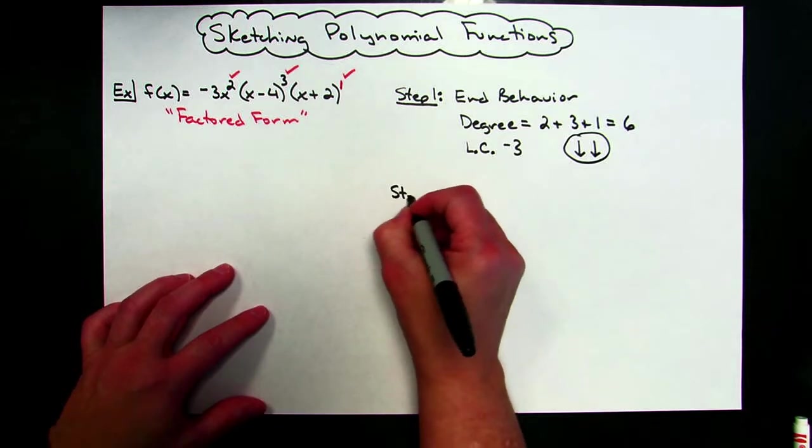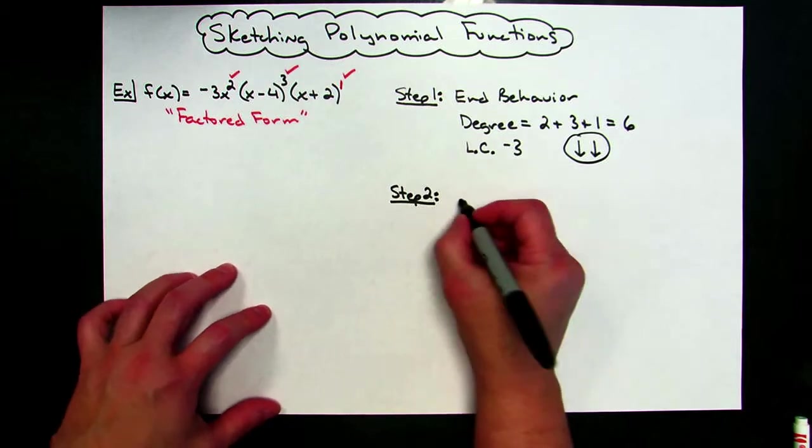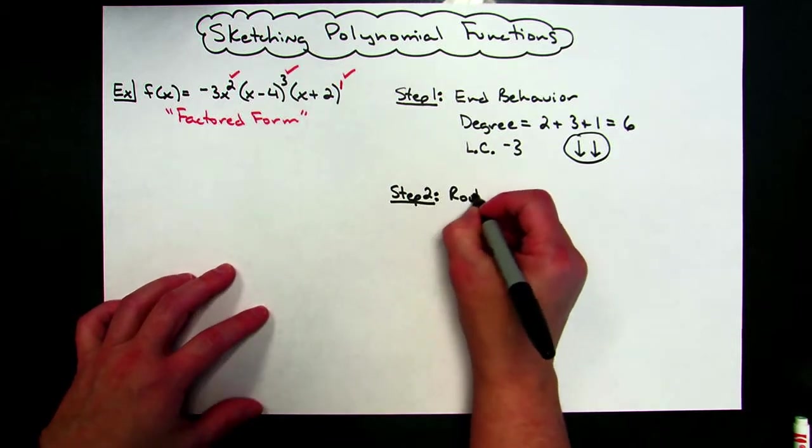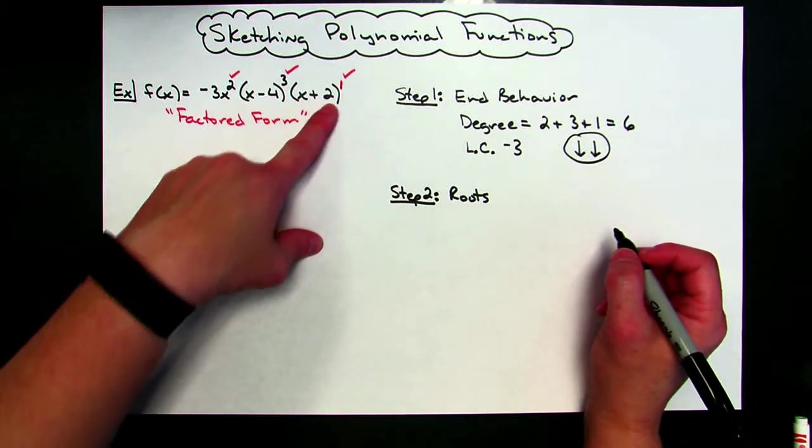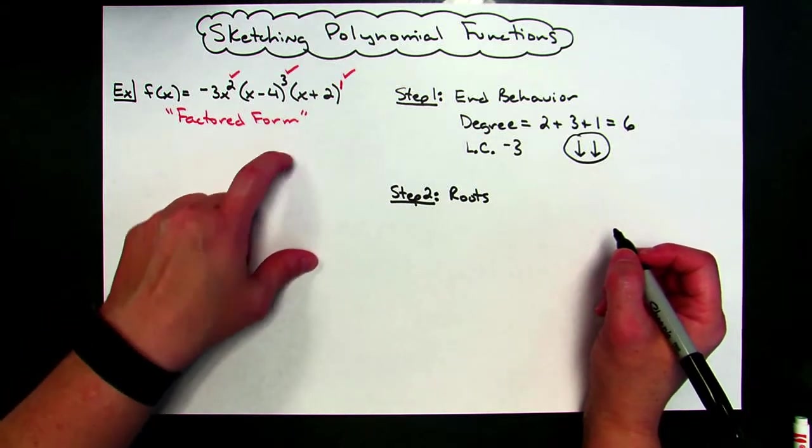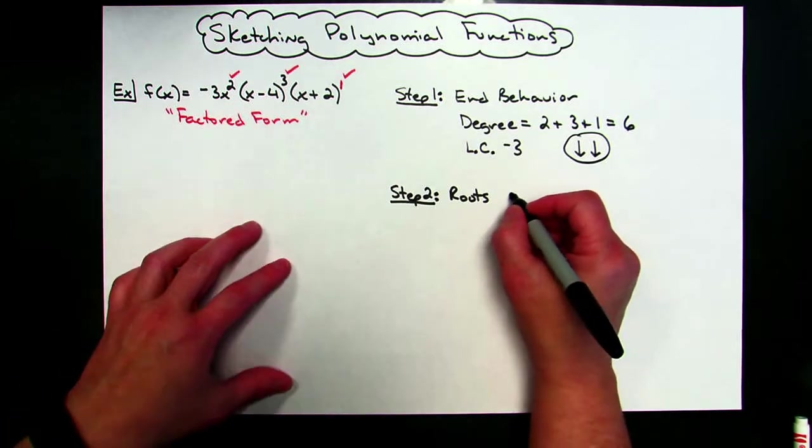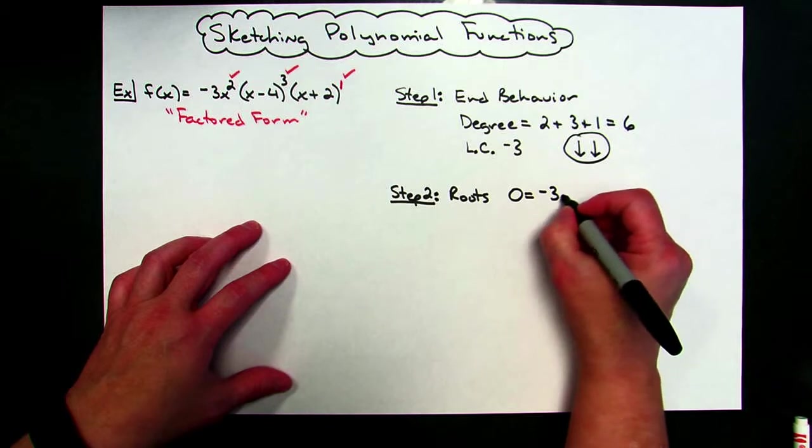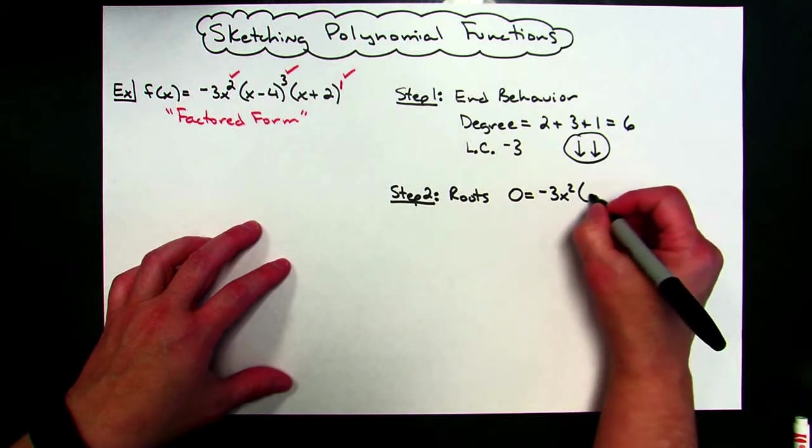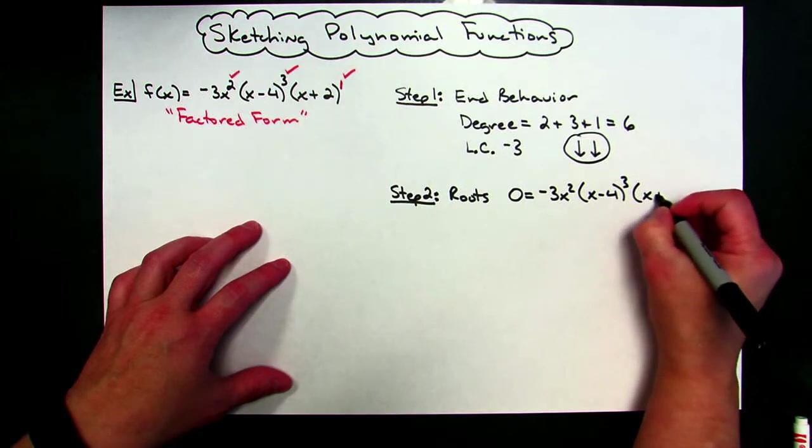Okay, now on step two, we need to take a look at this and find our roots. And this is where this one's a little bit easier than some of the others. I'm already in factored form, so I don't have to worry about factoring it. I just can instantly go to finding my roots. I'm going to take this polynomial function. I'm going to set it equal to zero. So zero equals negative three x squared times the quantity x minus four to the third times the quantity x plus two.